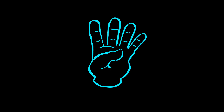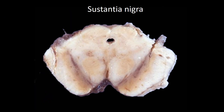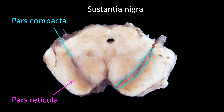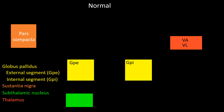The fourth structure is the substantia nigra, indicated in the cut specimen. This is a specimen of a midbrain with a normal substantia nigra. I am pointing to the pars compacta and the pars reticulata. We will introduce the pars compacta of the substantia nigra as a new element to the basic figure.